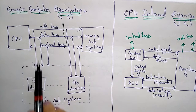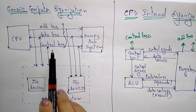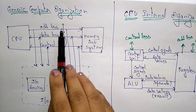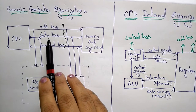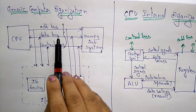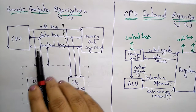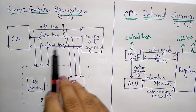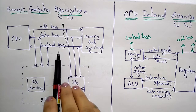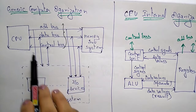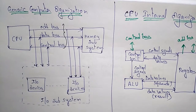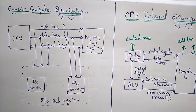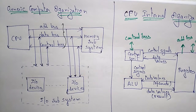The address bus is a unidirectional bus, whereas the data bus and control bus are bidirectional buses. The address bus holds the address of a particular system. The data bus holds whatever data has to be sent — from memory to CPU, CPU to memory, IO to CPU, or IO to memory — including data and instructions. The control bus holds control signals, directing where data needs to be sent or received.